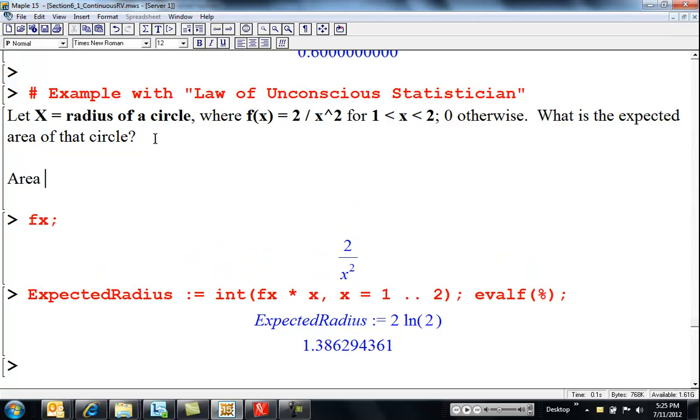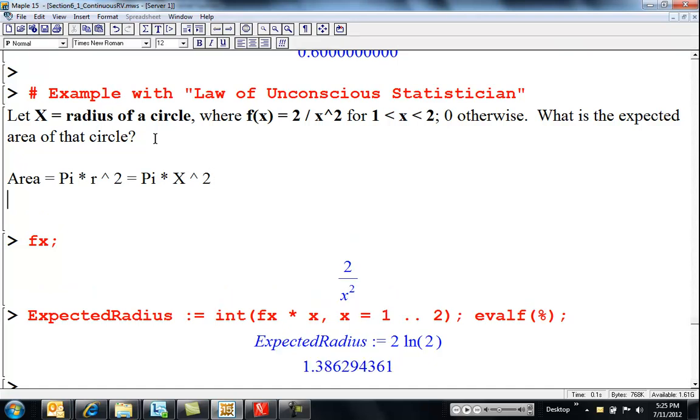pi times r squared, which is pi times x squared in our random variable language. So, I want to find expected value of pi times x squared.